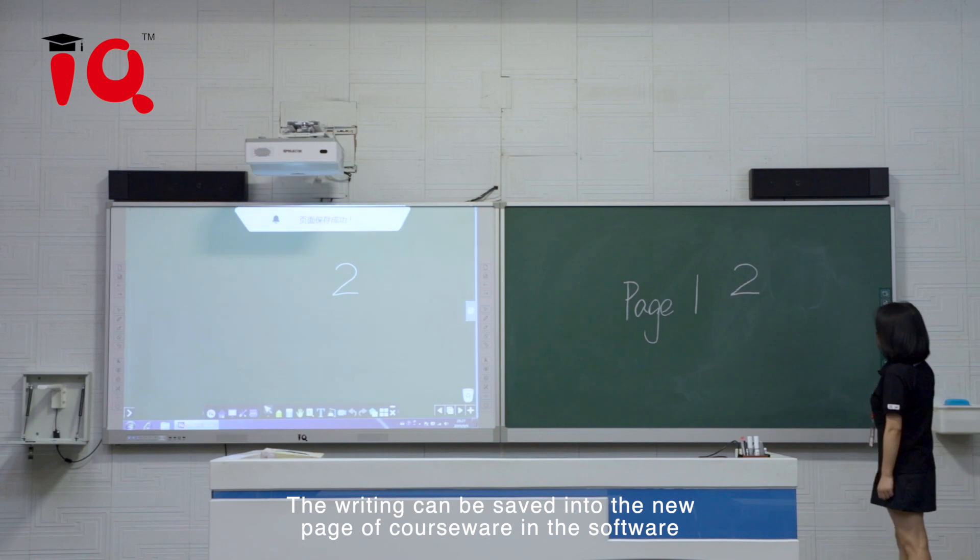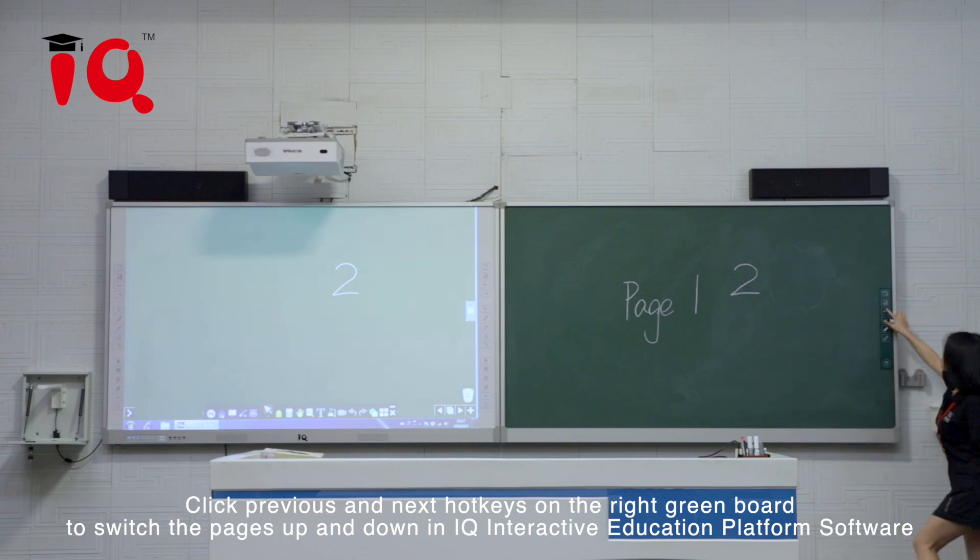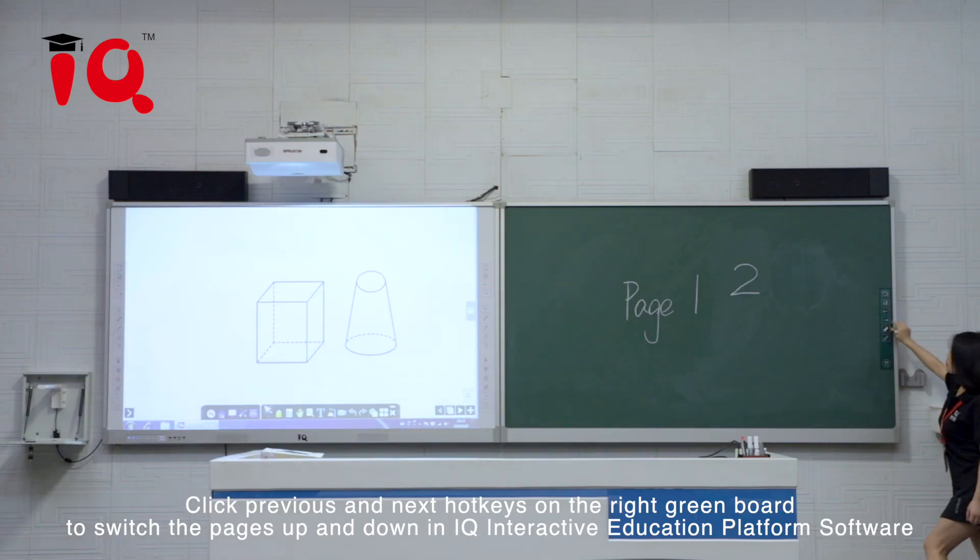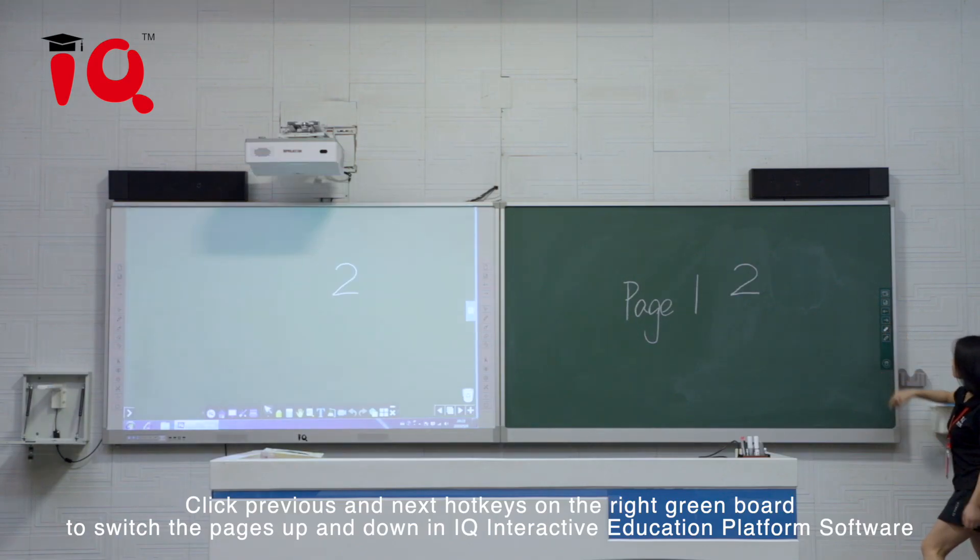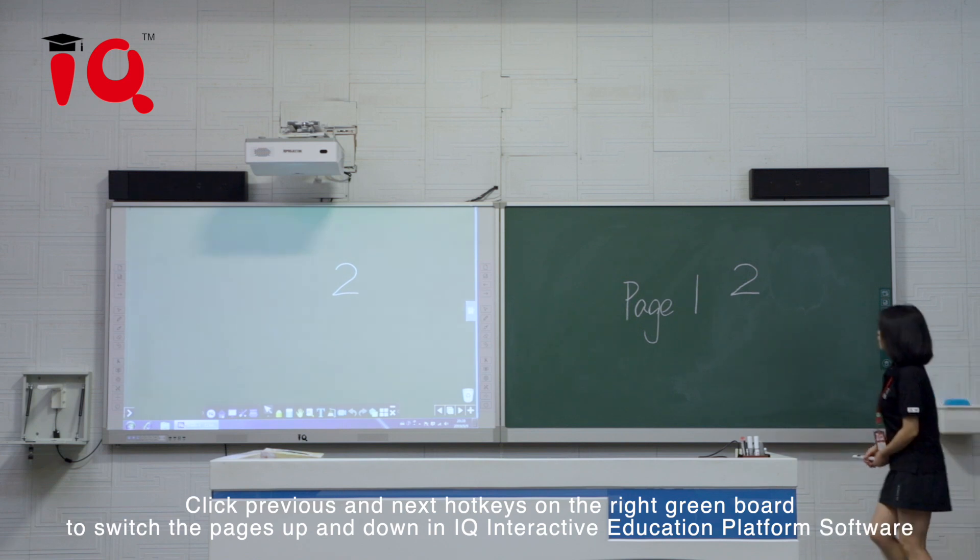The writing can be saved into the new page of the courseware in the software. Click Previous and Next hotkeys on the right greenboard to switch the pages up and down in IQ Interactive Education Platform software.